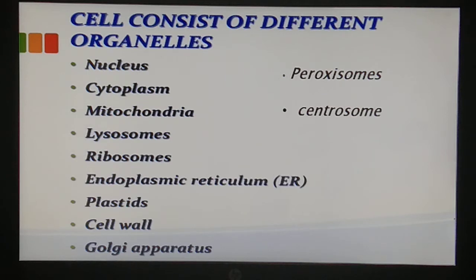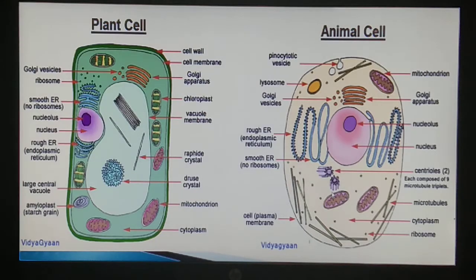The cell consists of different kinds of organelles. The first is the nucleus, then cytoplasm, mitochondria, lysosome, ribosomes, endoplasmic reticulum, plastids, cell wall, Golgi apparatus, peroxisomes, and centrosomes.